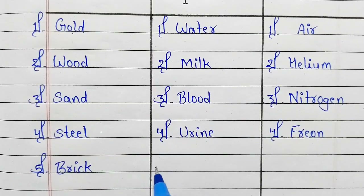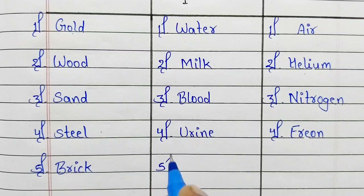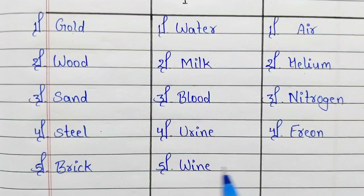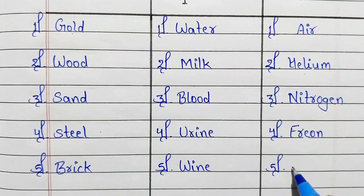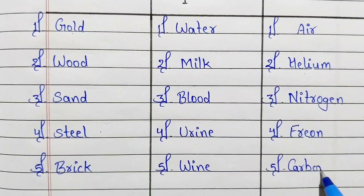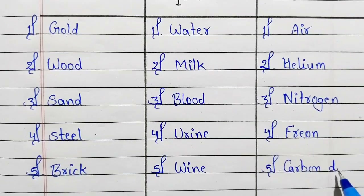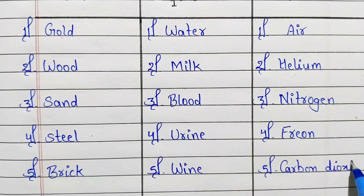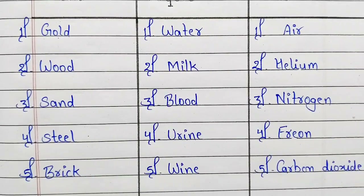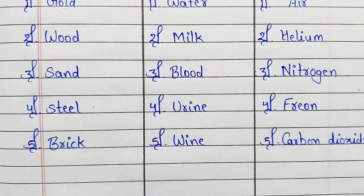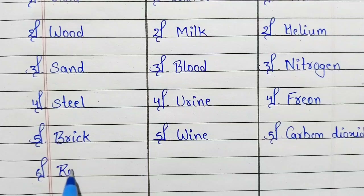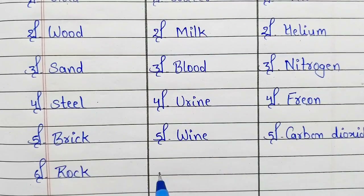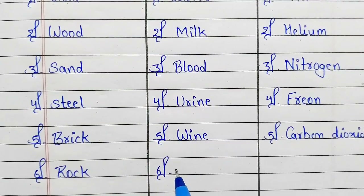Fifth number: solid — brick. Fifth number: liquid — wine. Fifth number: gas — carbon dioxide. Sixth number: solid — rock.